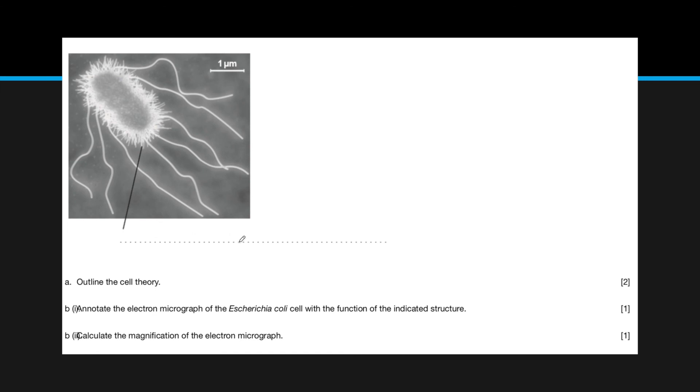Now that we've covered 1.1, here's an example of a paper 2 question. Part A: Outline the cell theory. What you want to do here is write down the three different components.